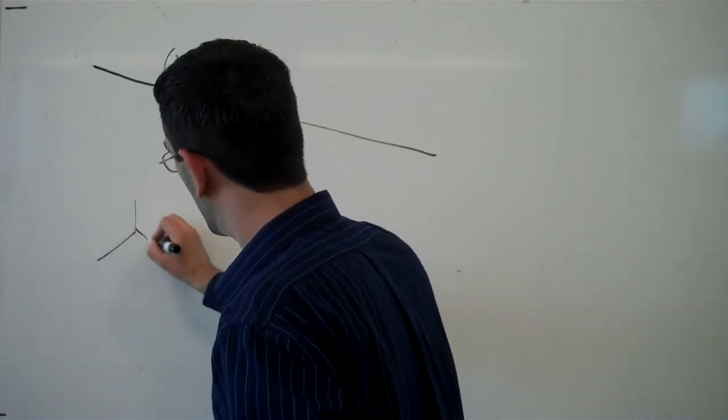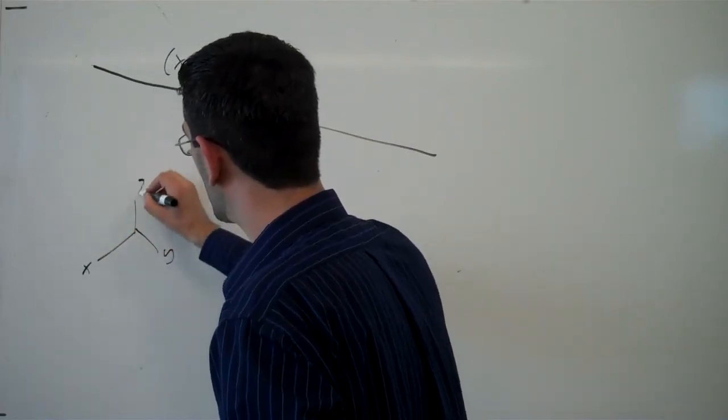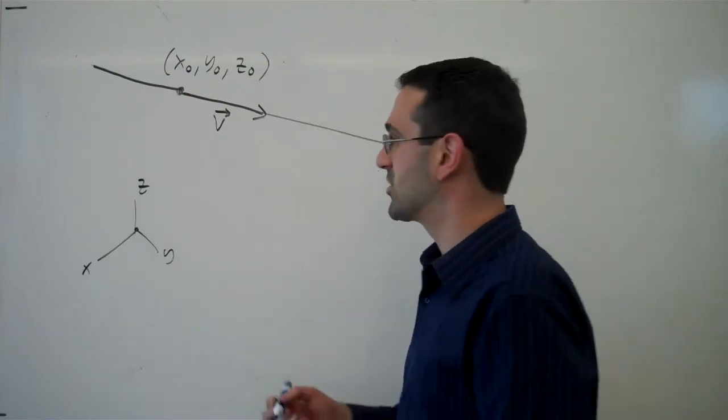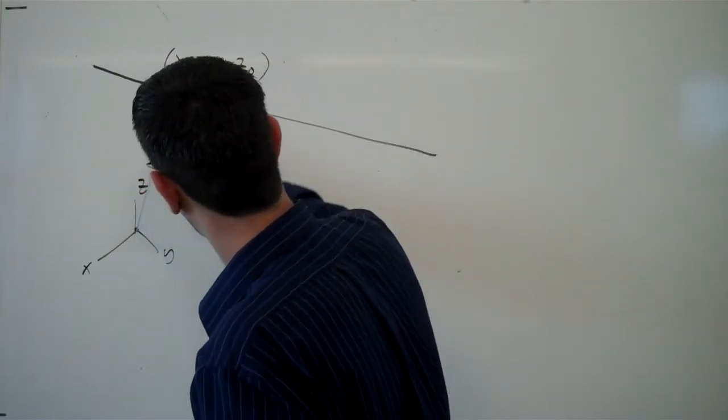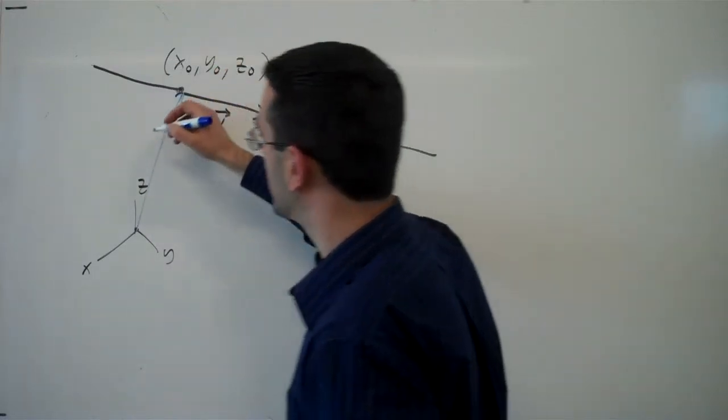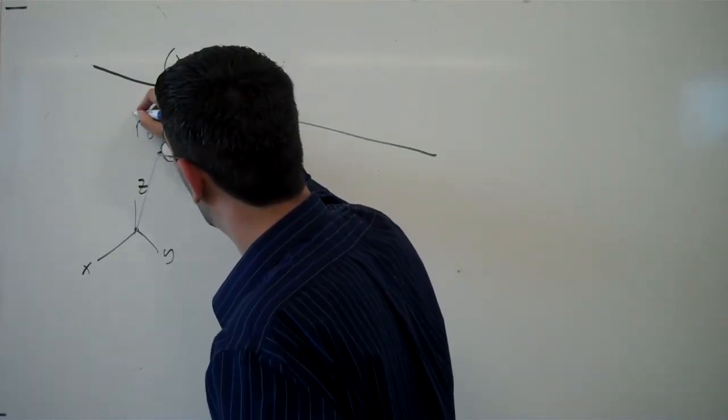We're going to introduce, let's imagine that we have the origin down here somewhere. We're going to introduce a position vector, a vector from the origin out to this point, and we'll call it r naught.